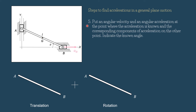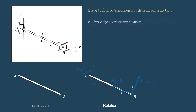We know that the acceleration at point A is zero, so there is no translation acceleration. Step 5: Put the angular velocity and angular acceleration at the point where acceleration is known, and the corresponding components of acceleration on the other point. Indicate the known angle. The angular velocity of rod AB is obtained from the previous problem. We suppose the angular acceleration of rod AB is anti-clockwise. Due to this alpha and omega, we draw the tangential acceleration at B directed to the right upward, and also the normal component of acceleration directed from B towards A. We have the angle between link AB and the horizontal, theta, which means we also have the angle between the tangential component of acceleration and the vertical line.